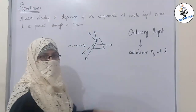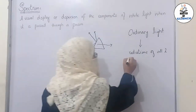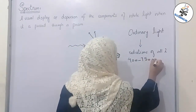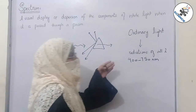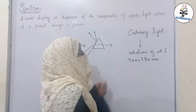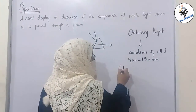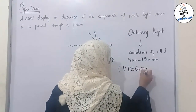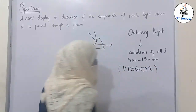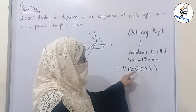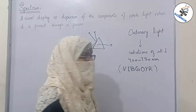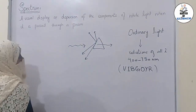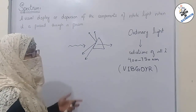Wavelength is denoted by lambda and ranges from 400 to 750 nanometers. It has different colors denoted by the term VIBGYOR — violet, indigo, blue, green, orange, yellow, and red. These are the different colors we can see when ordinary light is passed through a prism.